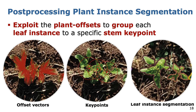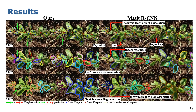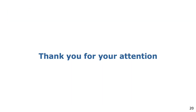We provide more details in our paper. We evaluate our approach on images of sugar beet fields and show that our approach achieves more accurate instance masks in comparison with Mask R-CNN. Thus, our approach provides more detailed information for field monitoring. You can find more information and quantitative results in our paper. Thank you for your attention.